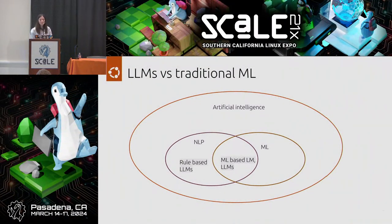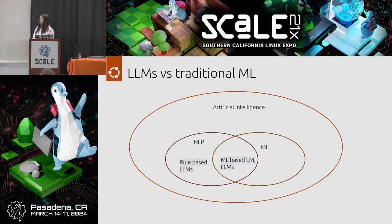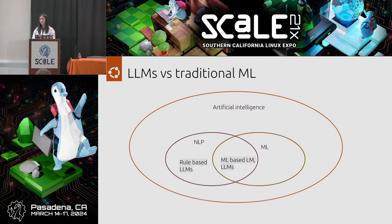Large language models versus traditional machine learning — I started with machine learning when it was not that popular, working especially on structured data. Through my role I meet a lot of companies, and most say they want to use large language models or Gen AI, but they have no use case. LLMs are specialized in NLP or natural language processing, but they are not specialized in image analysis or ranking structured data tasks. There are other ML algorithms such as linear regression that are more suitable for those.